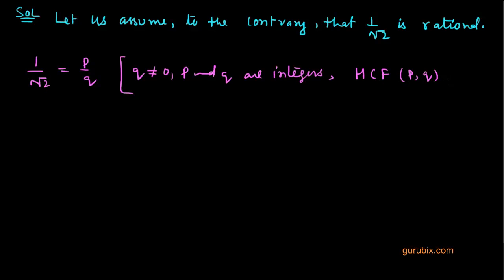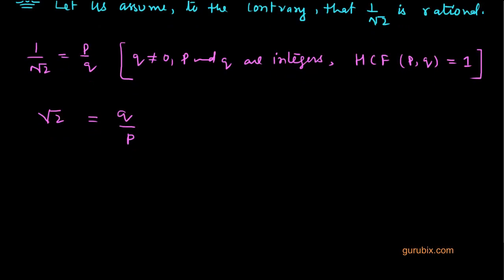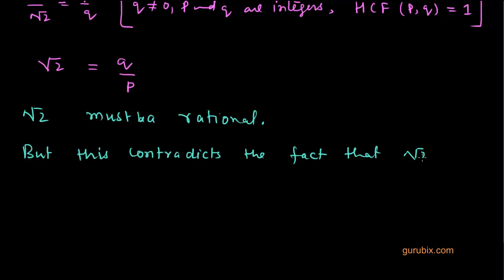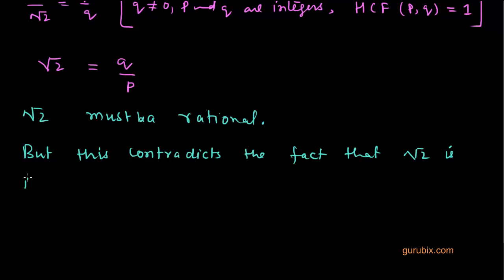Rearranging this statement, we get that under root 2 is equal to q over p. What we observe here is that q over p is also a rational number, which is equal to under root 2. So under root 2 must be rational, but this contradicts the fact that under root 2 is irrational.